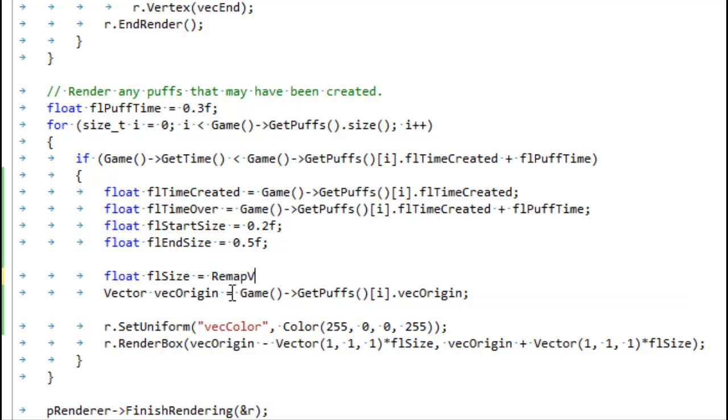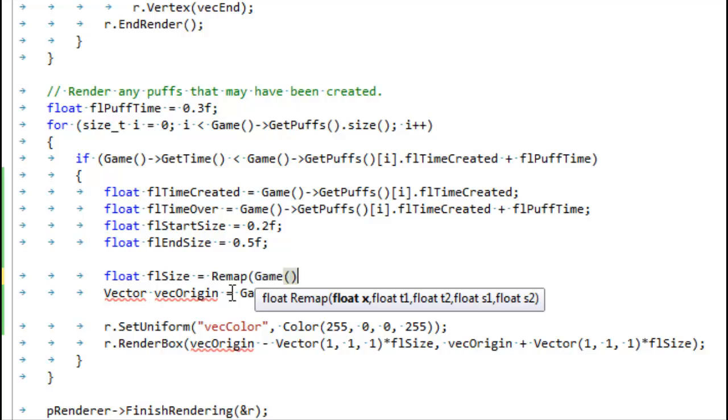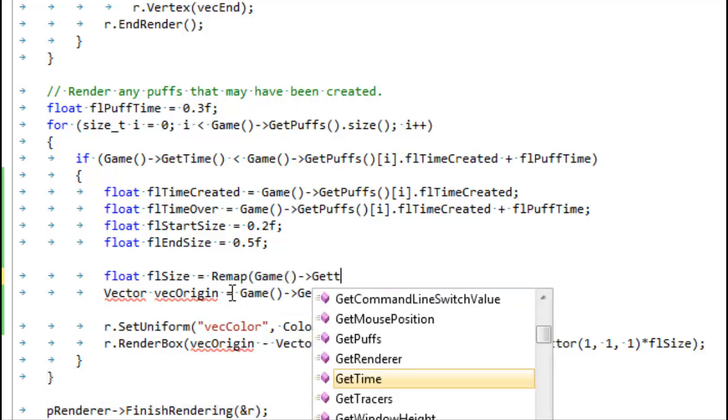Let's just make it remap. And then we'll pass in our X value. Our X value is going to be the current game time. And then what are we interpolating from? What's our T1 and T2?